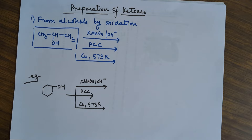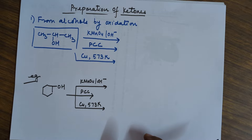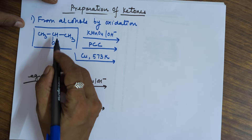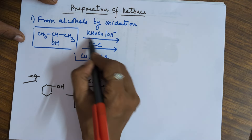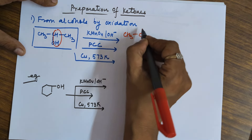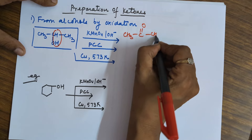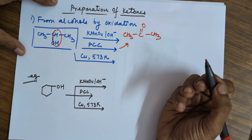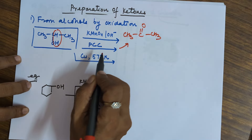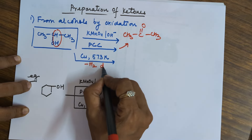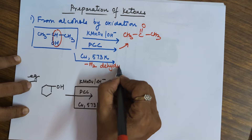Moving on to the preparation of ketones, we begin with preparation from alcohols. It has to be a secondary alcohol, not a primary alcohol. On oxidation with KMnO4, the hydrogens are removed and you end up in CH3–C=O–CH3. PCC is another reagent which will again give you a ketone like this. Copper at 573 K has a special property of removing hydrogen, so we also call this reaction dehydrogenation.